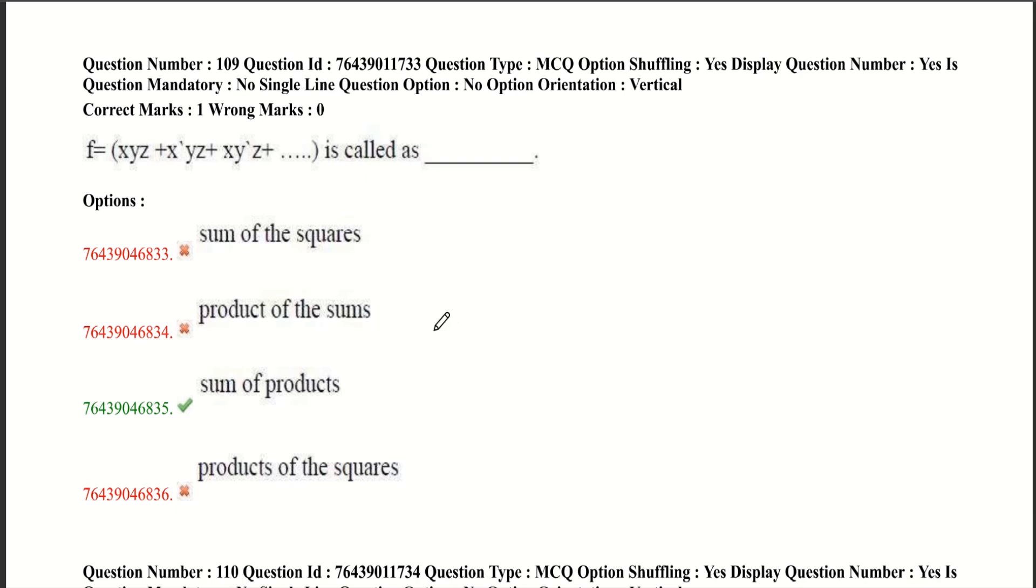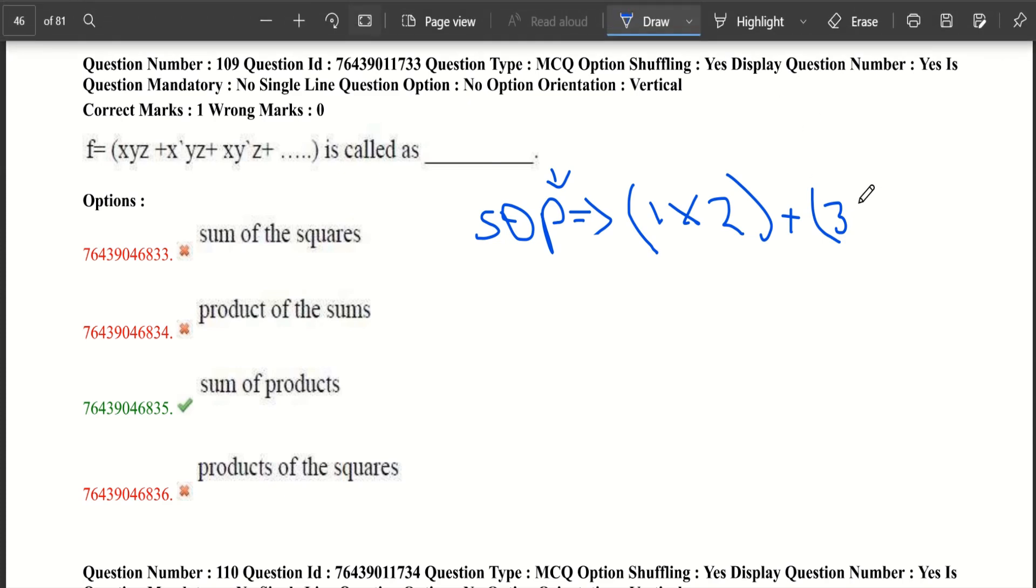Which means sum of products and products of sums. Sum of products means we are summing the products. It means we are also adding the multiplied values. It is like 1 into 2 plus 3 into 4. This is sum of products.